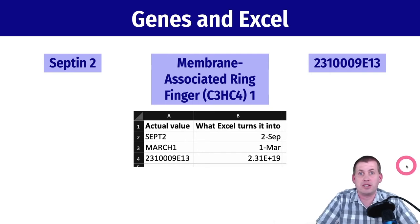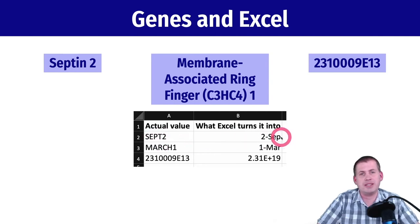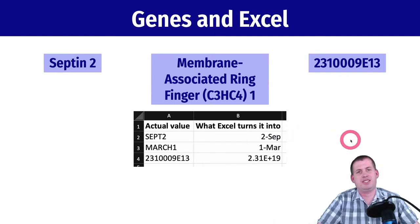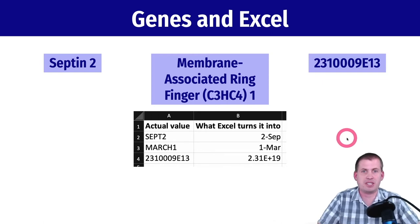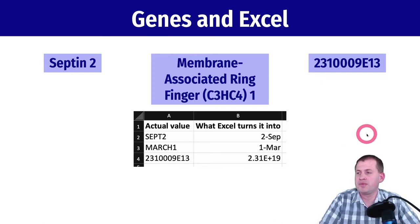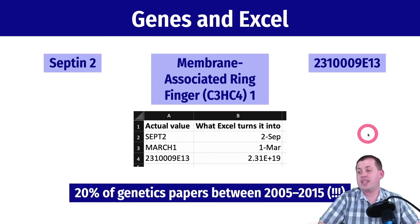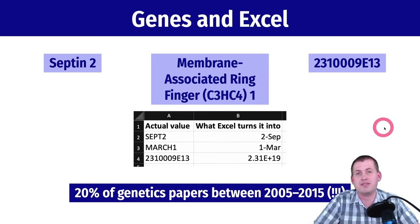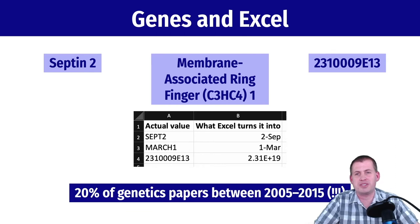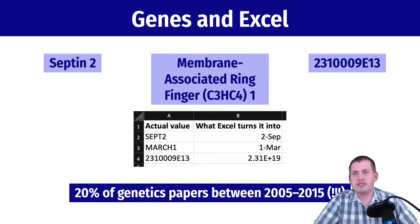One analysis found that 20% of genetics papers published between 2005 and 2015 had issues with data being converted into dates and incorrect numbers instead of gene names — a scary amount of papers with serious data issues, mostly caused by just opening a file in Excel and saving it. So don't put stuff in Excel; it's dangerous.